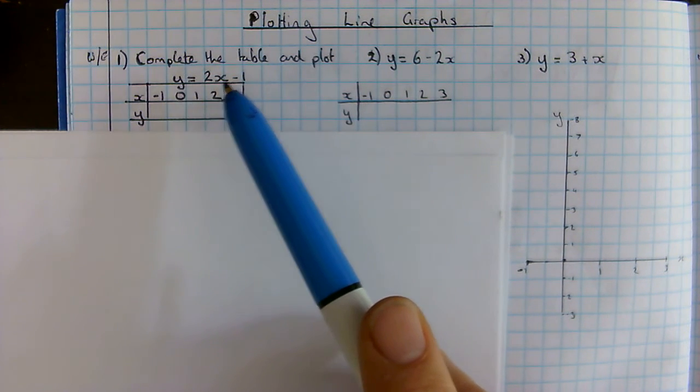When x equals 2, y is 2 times 2 take away 1, which is 3. Same with 3: 2 times 3 is 6, take away 1 is 5. I've got 0 and my positives filled in. I'm going to do my negative now. When x equals minus 1, y equals 2 times minus 1 take away 1. 2 times minus 1 is minus 2, take away 1 is minus 3.